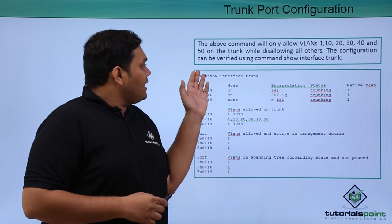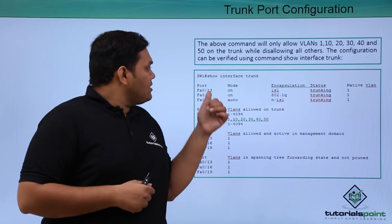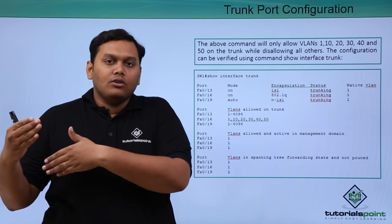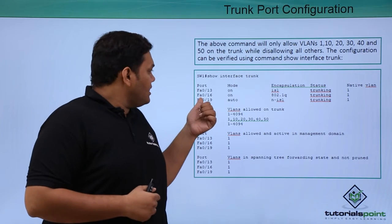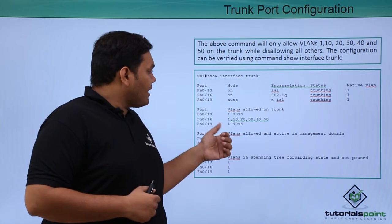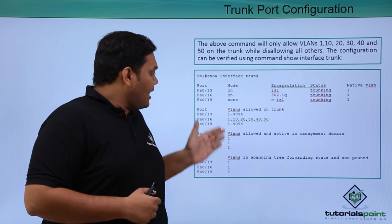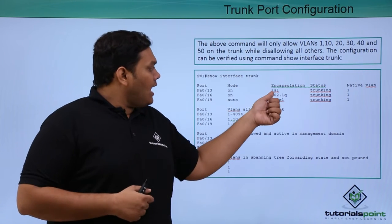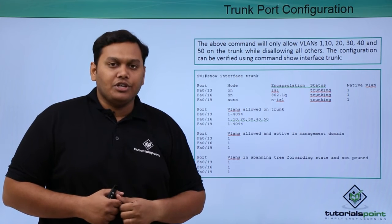After entering that command, you use show interface trunk to verify. You can see that the VLANs accessing the trunk link are clearly listed as 1, 10, 20, 30, 40, and 50. The encapsulation mode shows ISL and 802.1Q, as well as DTP protocols being used.